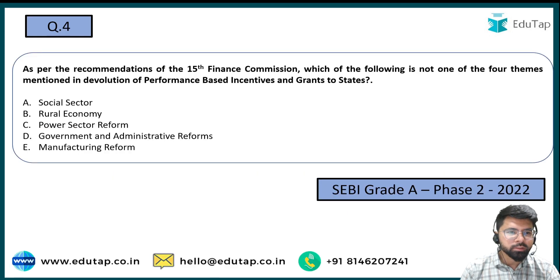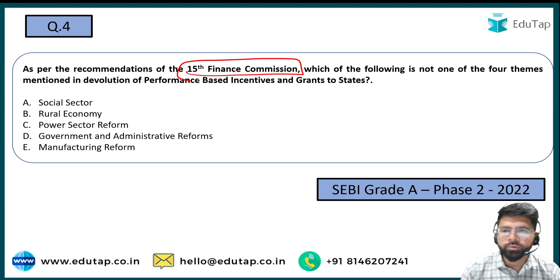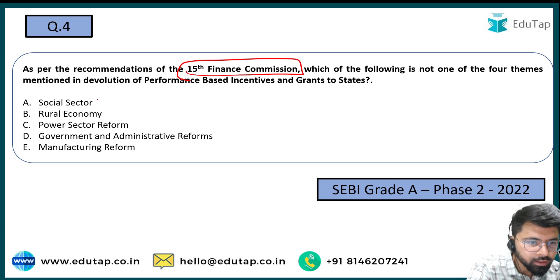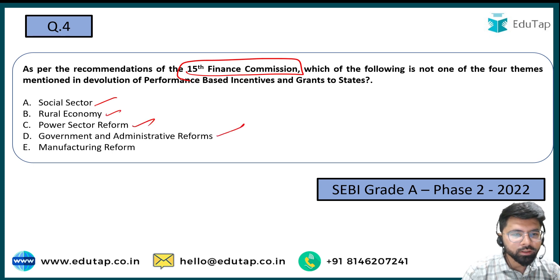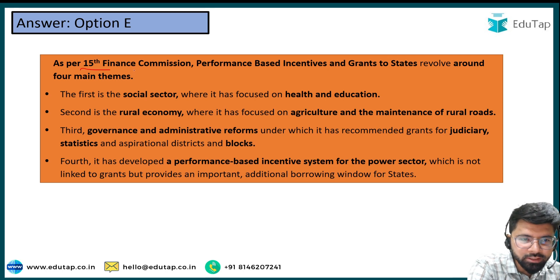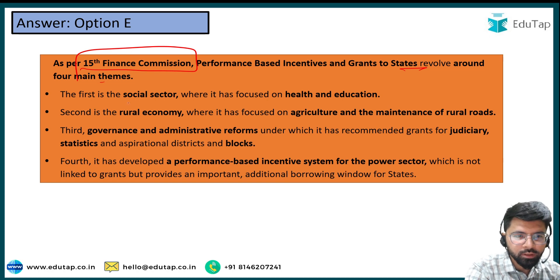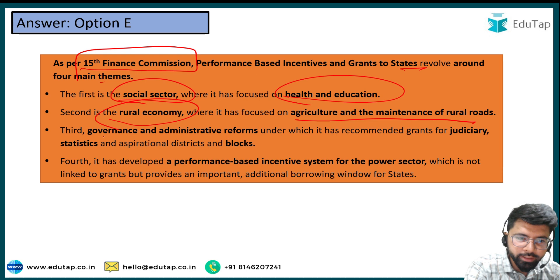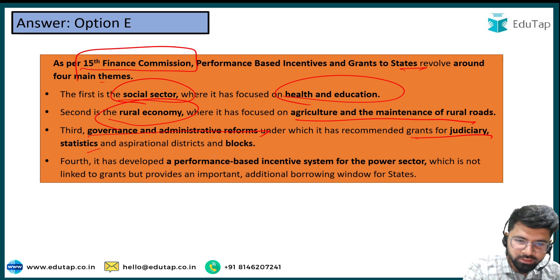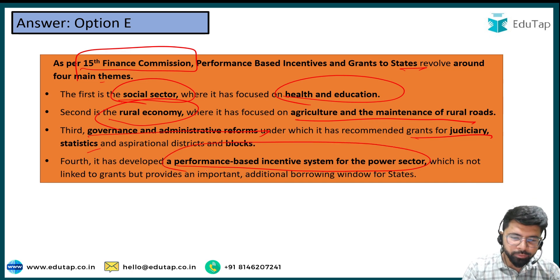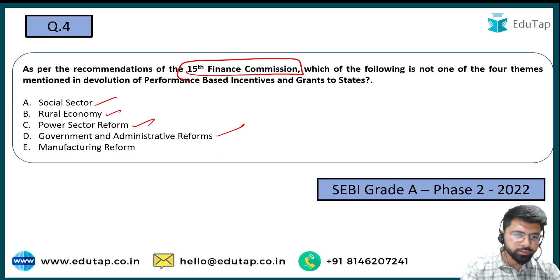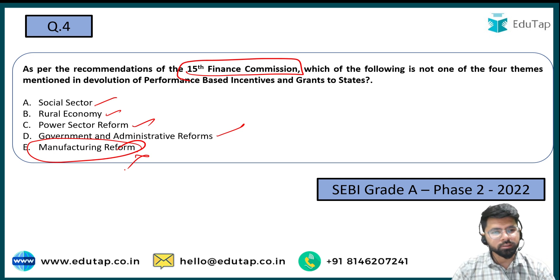Next question: as per the recommendations of the 15th Finance Commission, which of the following is NOT one of the four themes for devolution of performance-based incentives and grants to states? Options include social sector, rural economy, power sector reform, government and administrative reforms, and manufacturing reform. The answer is option E — manufacturing reform. The four themes are: social sector (health and education), rural economy (agriculture and rural roads), governance and administrative reform (judiciary, statistics, aspirational districts), and performance-based incentives for the power sector.